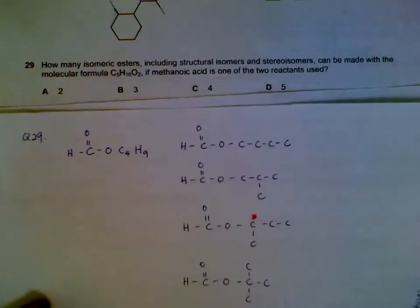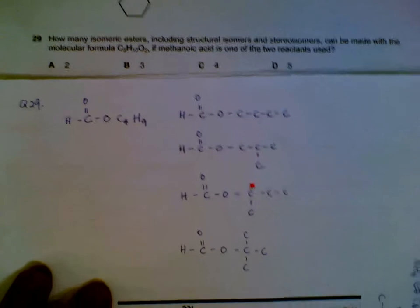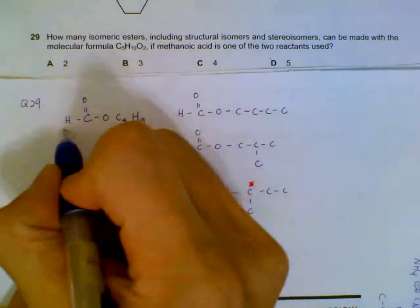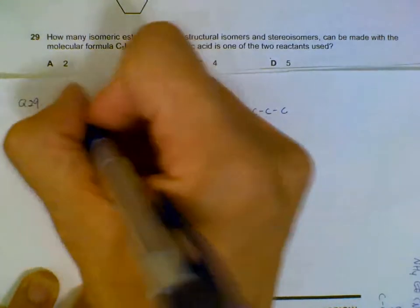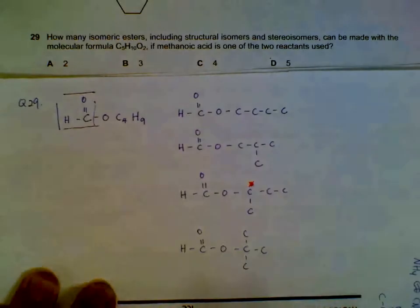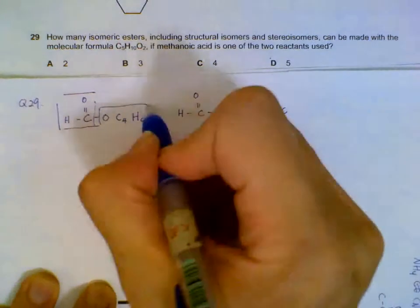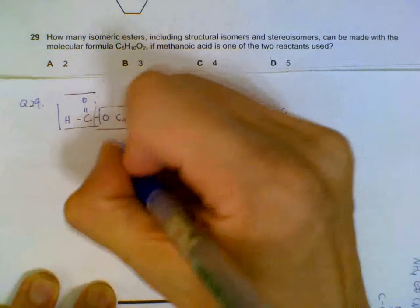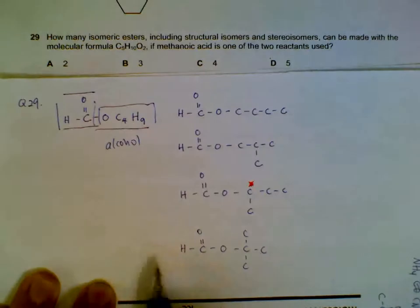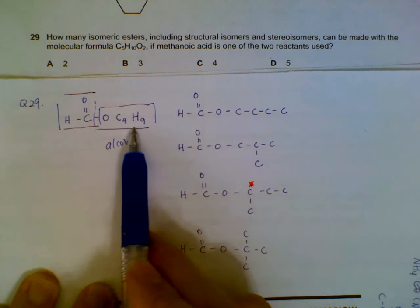So what we can see is we can draw a structure. This part is contributed by methanoic acid, so this is fixed. This part will be contributed by your alcohol, and then we have to see how many structural isomers can we get from this combination.